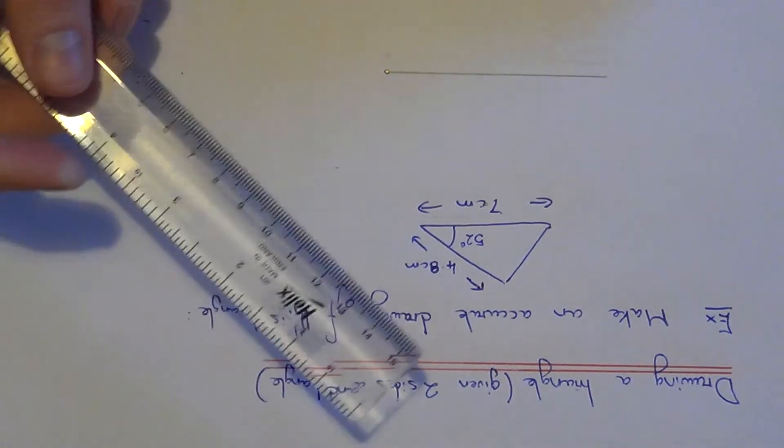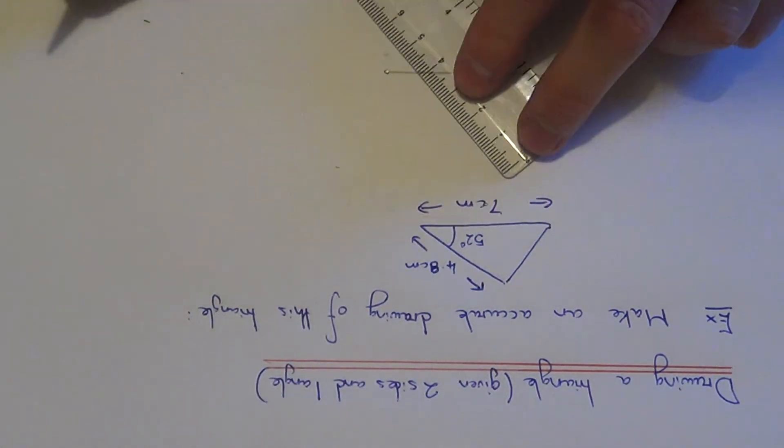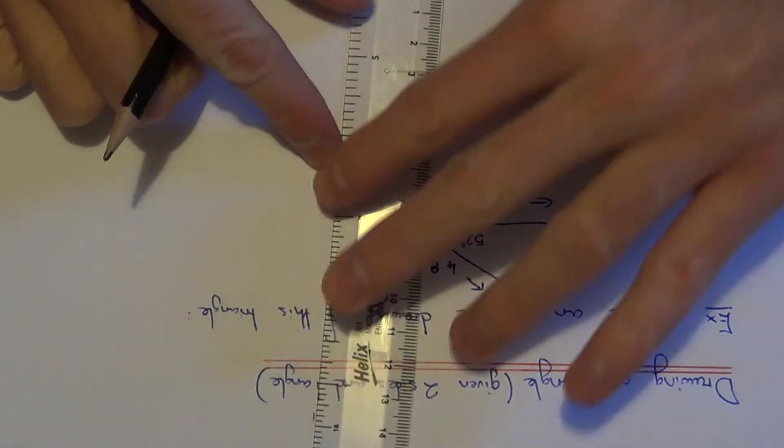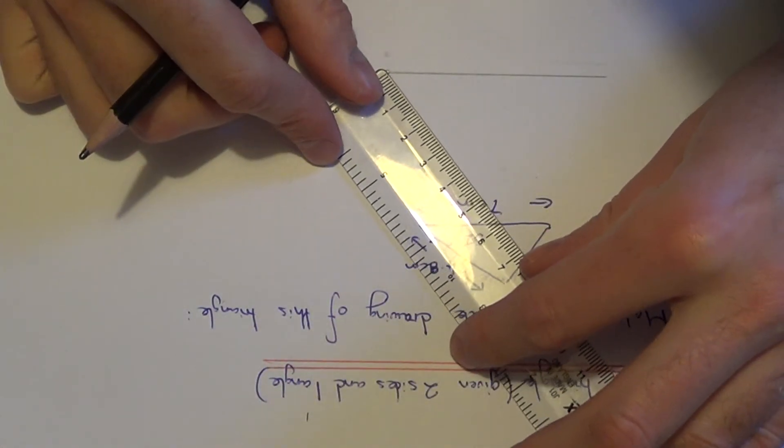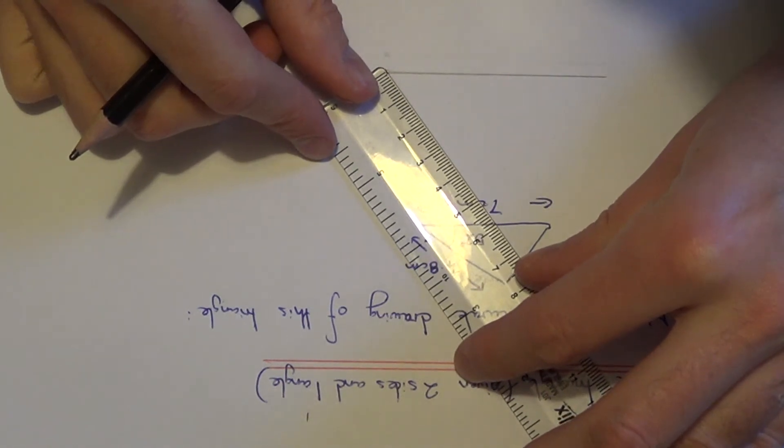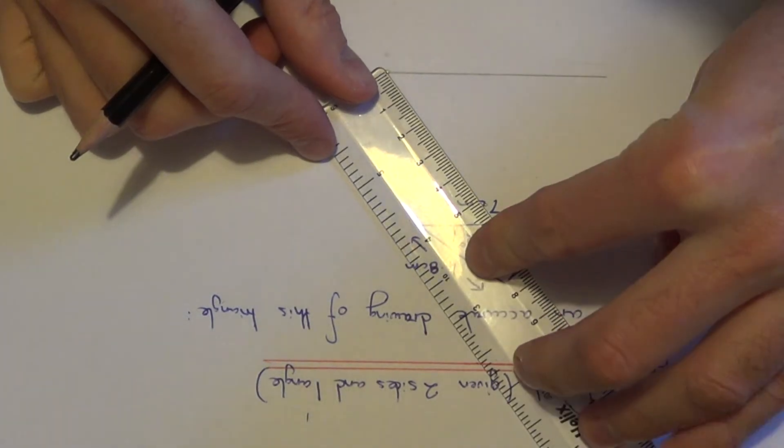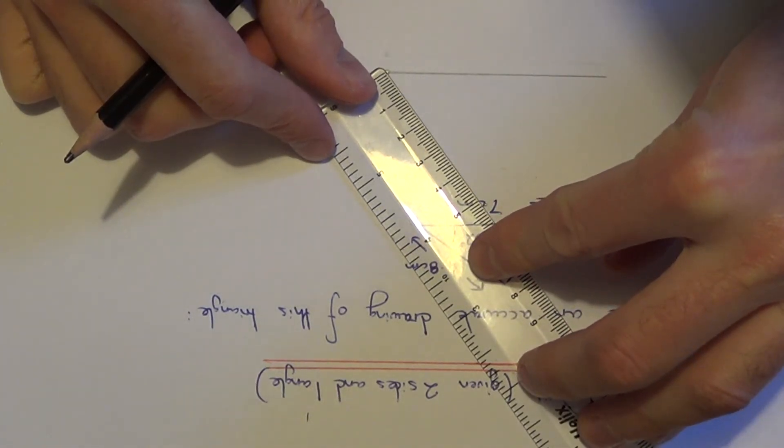We have now got to get the line the correct length. So if we put 0 on the bottom right hand corner of the line and line it up with the point we have just marked, we only need to make the line 4.8cm.